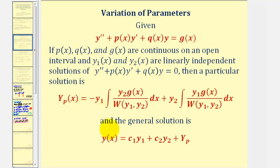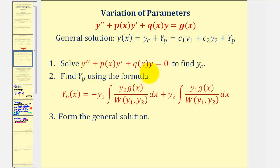We can find the general solution to the original non-homogeneous differential equation using this formula for y of x, where the sum of the first two terms is the general solution to the corresponding homogeneous differential equation, often called y sub c, the complementary function, plus big y sub p. The steps we'll follow are: number one, solve the corresponding homogeneous differential equation to find y sub c; then use this formula to find big y sub p; and then use the results of steps one and two to form the general solution.